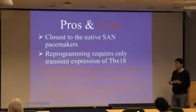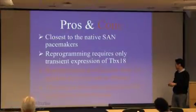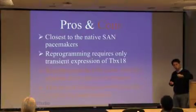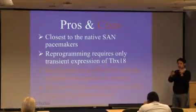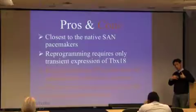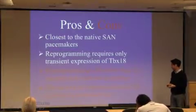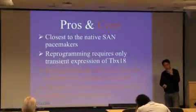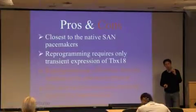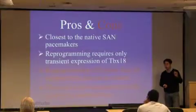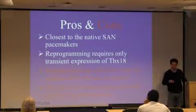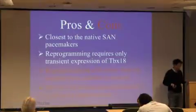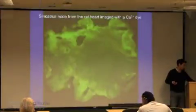The problems with the reprogramming approach: the efficiency of reprogramming could be random — we're injecting the gene and its uptake by cardiomyocytes is left to chance. The fate of the reprogrammed cells needs to be characterized, and this is a problem because there is not a single necessary and sufficient marker for cardiac pacemaker cells. We think about solving this using lineage tracing experiments on a daily basis.